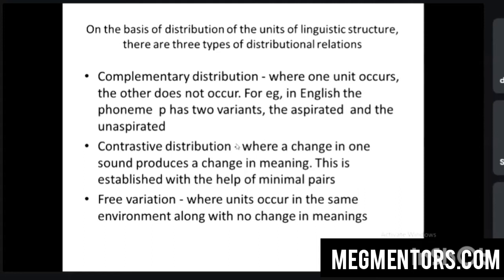On the basis of distribution of units of linguistic structure, there are three types of distributional relationship: complementary distribution, contrastive distribution, and free variation. Complementary distribution can be explained using allophones and allomorphs. In English, the phoneme /p/ has two variants — aspirated and unaspirated. Where one unit occurs, the other does not occur in the same position. For example, /p/ in initial stressed position is always aspirated; the unaspirated form will never appear there.